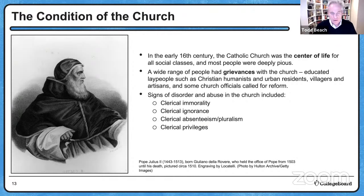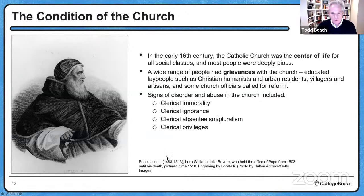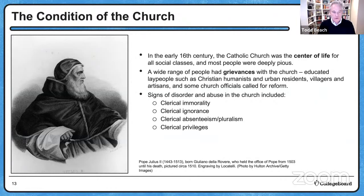There were also clerical privileges — the Church didn't have to pay taxes, and clerics enjoyed many privileges that common people throughout Europe did not have. Some saw this as an abuse to be remedied. The image shown here is Pope Julius II, who held the office until his death in 1513 — supposedly having to deal with some of these changes the Church was going through.